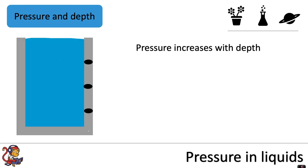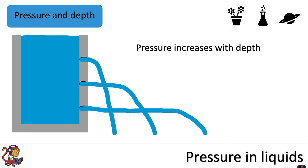In fluids, pressure increases with depth. So if we had this container full of water with three holes coming out of it — if pressure increases with depth, have a think about what it would look like if we opened all of these holes to allow the water out. The top hole is under the least pressure, so there is less force applied to the water at the top. Whereas the bottom hole is deepest and therefore under the most pressure, because pressure increases with depth.